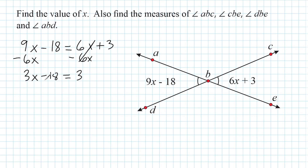Now we take the constant minus 18 and send it to the right side of our equation by doing the inverse — we add 18 on both the left-hand side and the right-hand side. That gives us positive 21 on the right, and on the left we still have 3 multiplied by whatever X is. To get rid of this coefficient, we divide the coefficient by itself.